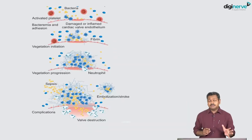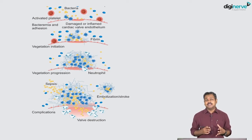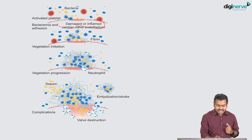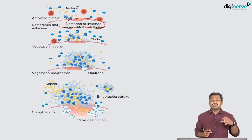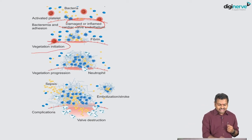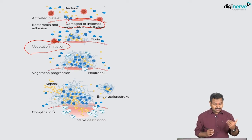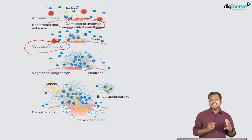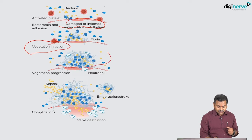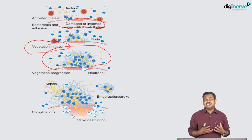In the pathogenesis of infective endocarditis, the valve may be normal or damaged — damaged valves are more prone to infection. When bacteremia occurs, bacterial colonies in the blood come in contact with the damaged cardiac valve endothelium, translocate there, and form a vegetation. Vegetation is a colony of organisms surrounded by inflammatory cells — platelets and mononuclear cells — which then progressively enlarges within a fibrin mesh.